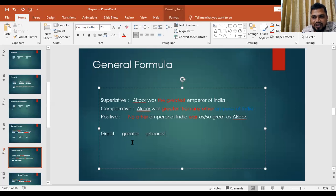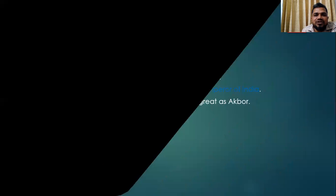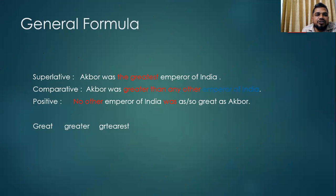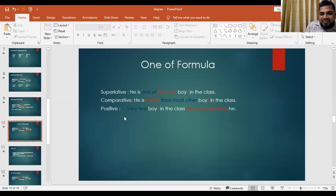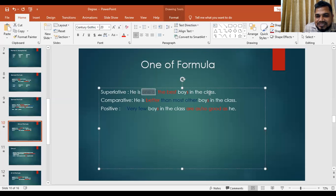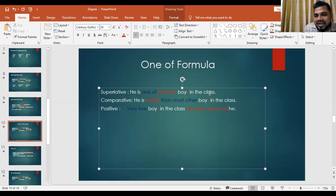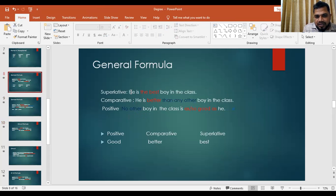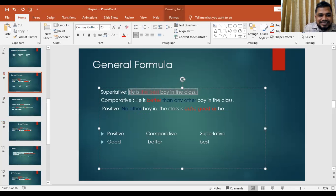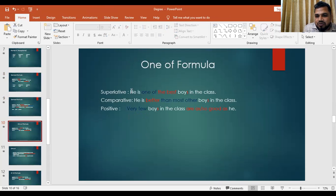Formula number two is the one-of formula. In the general formula, superlative was 'He is the best boy in the class.' But in the one-of formula, you see: 'He is one of the best boys in the class.' When superlative degree is formed with 'one of', for comparative you change 'the best' to 'better', and instead of 'than any other', you write 'than most other' or 'than many other boys in the class.'